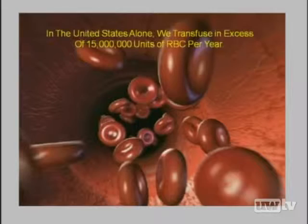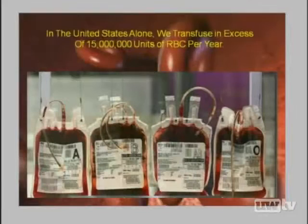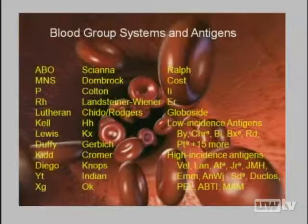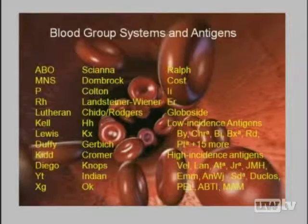Even school children are well aware of the ABO antigens and probably the D antigens as well, but if you look comprehensively at the antigens described thus far, there are 300 to 400 different blood group antigens depending on how exactly you categorize them. So every transfusion except for an autologous transfusion is a very complicated immunological stimulus to the recipient.